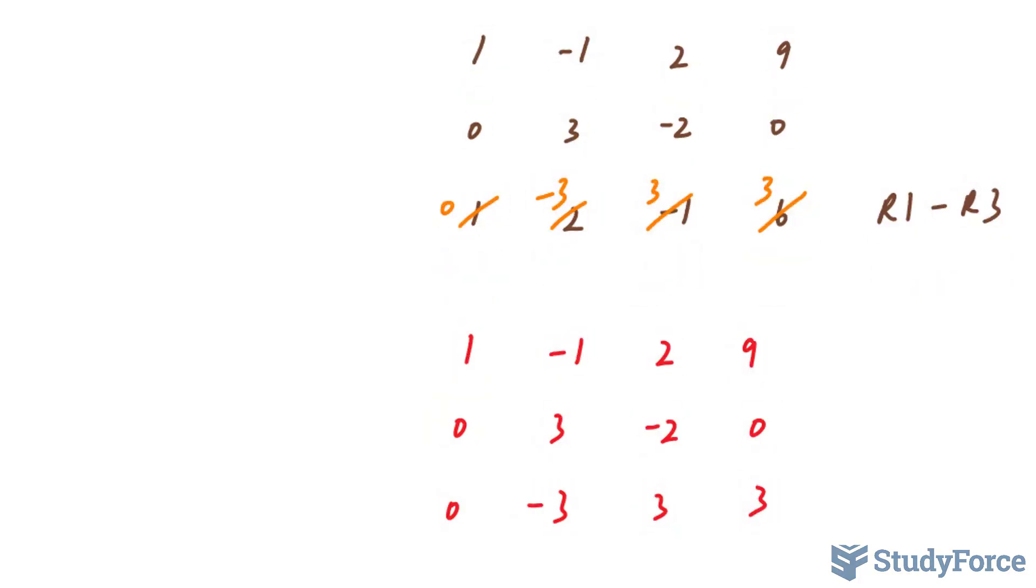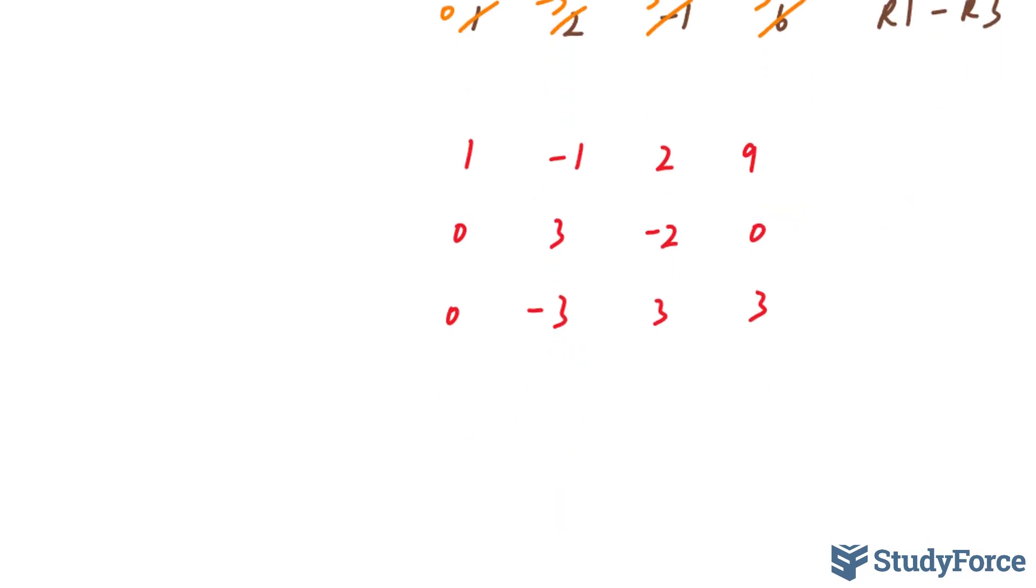The next thing that I'll do to make this 3 into a 1 is multiply the whole row by a third. So row 2 gets multiplied by a factor of 1 over 3. That being said, this becomes a 1. This becomes negative 2 over 3, and this remains 0.